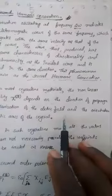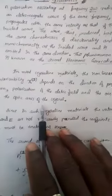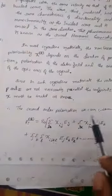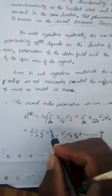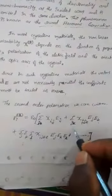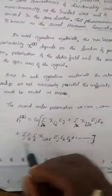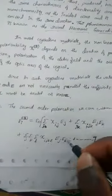In most crystalline materials, the nonlinear susceptibility χ² depends on the direction of propagation and polarization of the electric field and orientation of the optic axis of the crystal. In such crystalline materials, the polarization vector P and electric field vector E are not necessarily parallel, so the coefficient χ must be treated as a tensor. Therefore, the second order polarization can be written as a sum over indices i, j, k.